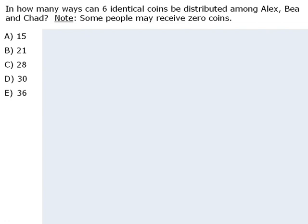To solve this question, we are going to list all possible outcomes using sets of three numbers. The first number represents the number of coins Alex receives, the second number represents the number of coins B receives, and the third number represents the number of coins Chad receives. We are going to list our outcomes systematically.